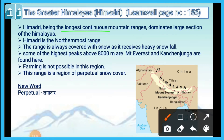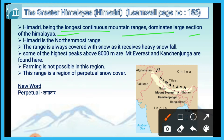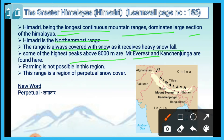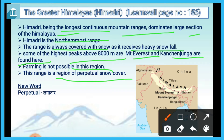Himadri, being the longest continuous mountain range, dominates a large section of the Himalayas. Himadri is the northernmost range. The range is always covered with snow as it receives heavy snowfall. Some of the highest peaks above 8,000 meters, such as Mount Everest and Kanchenjunga, are found here. Farming is not possible in this region, as it is a region of perpetual snow cover.